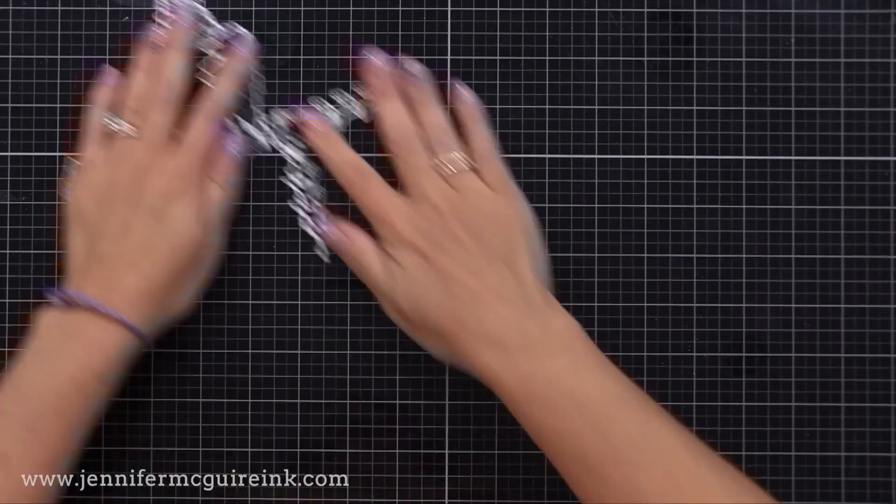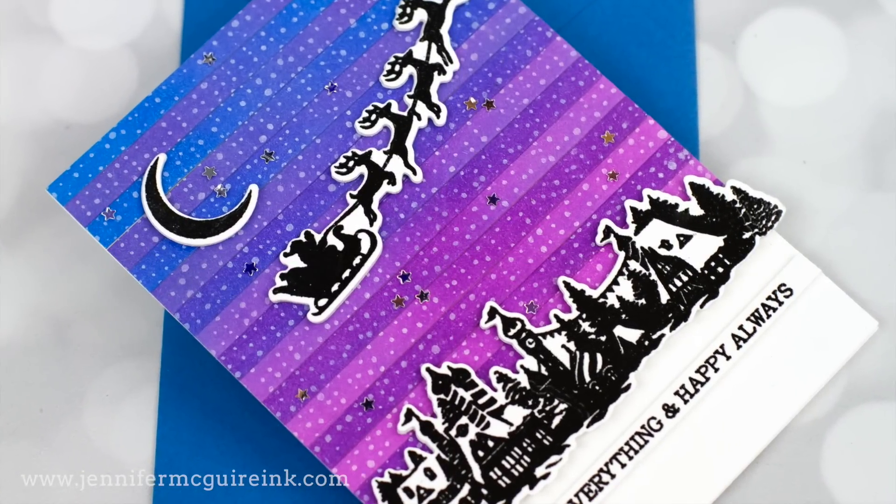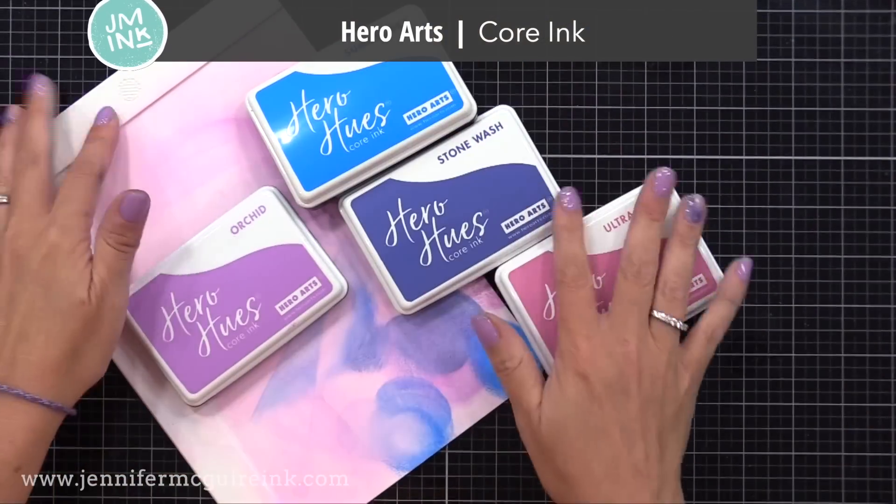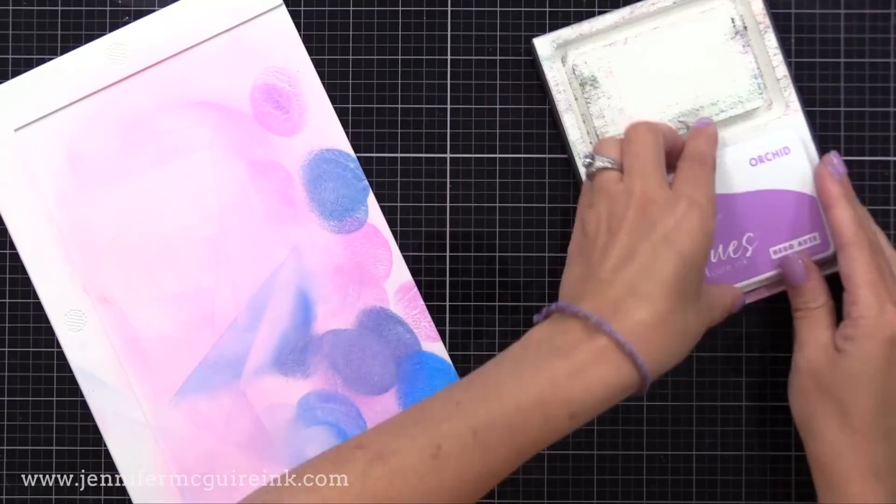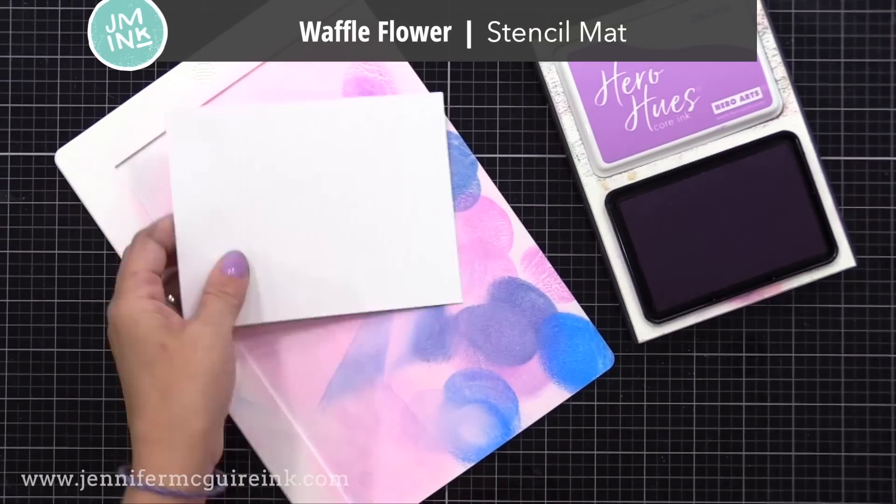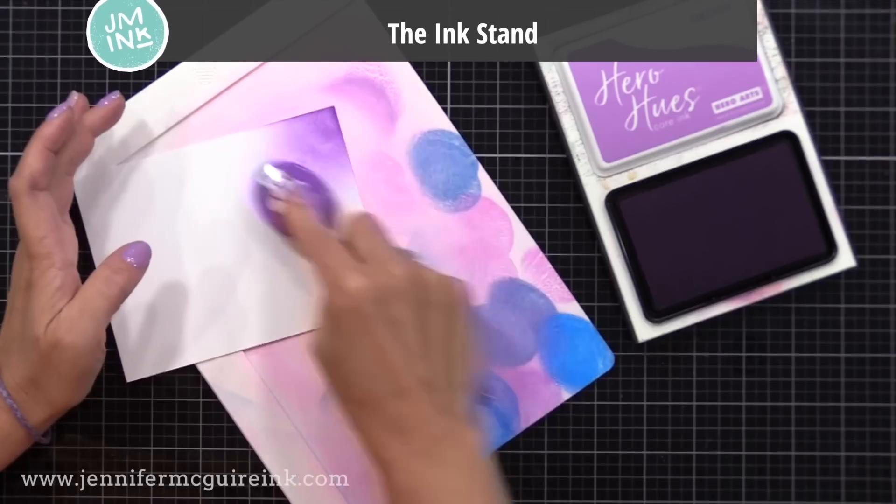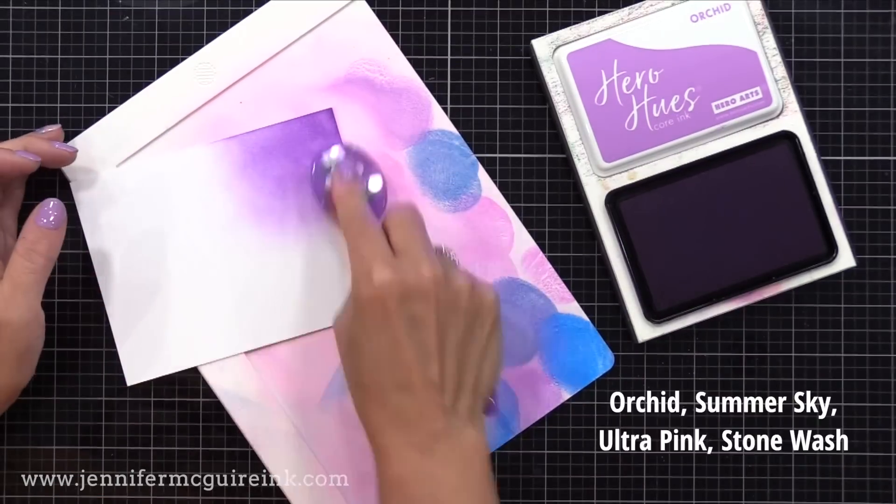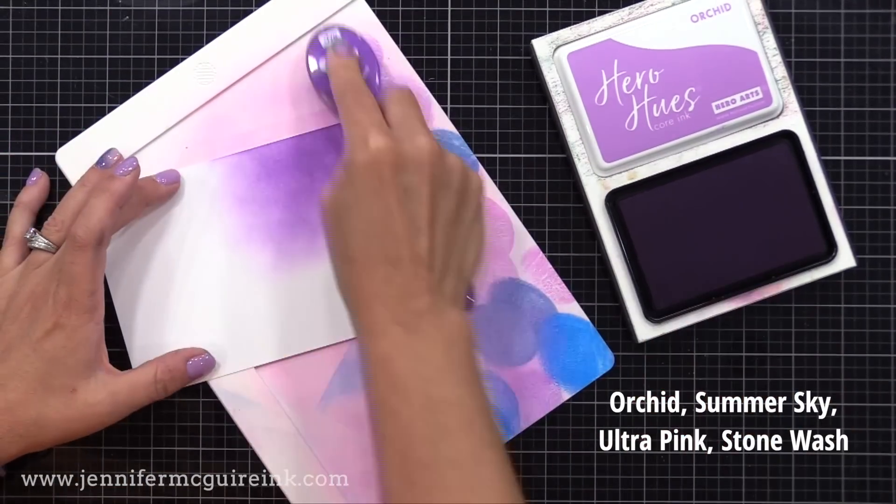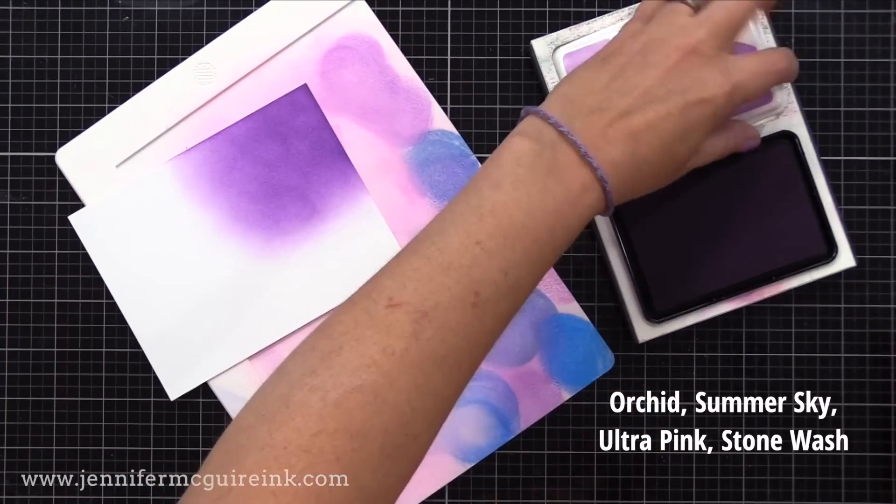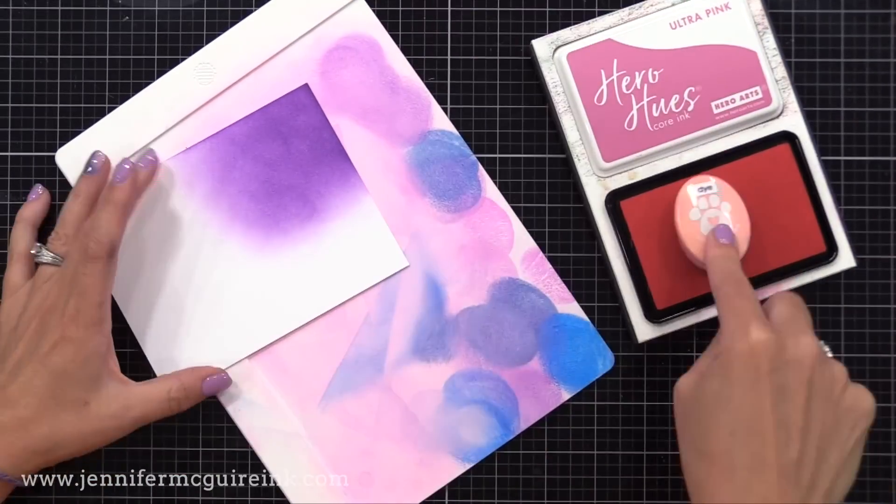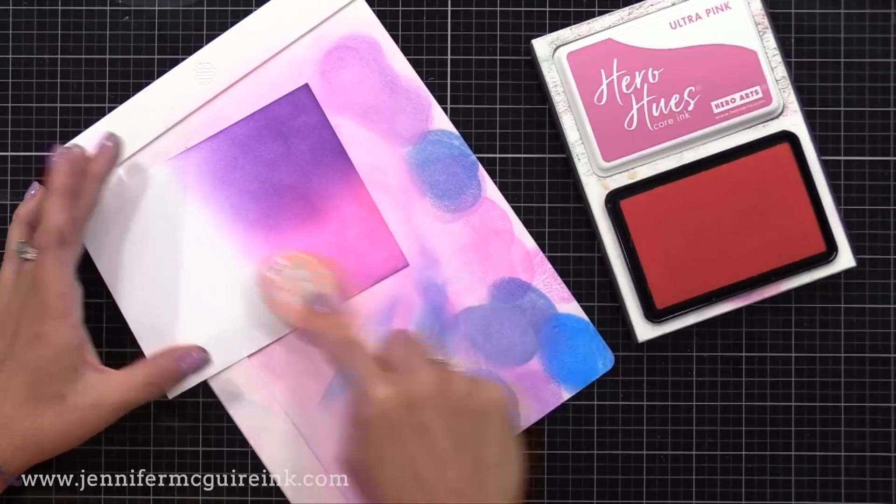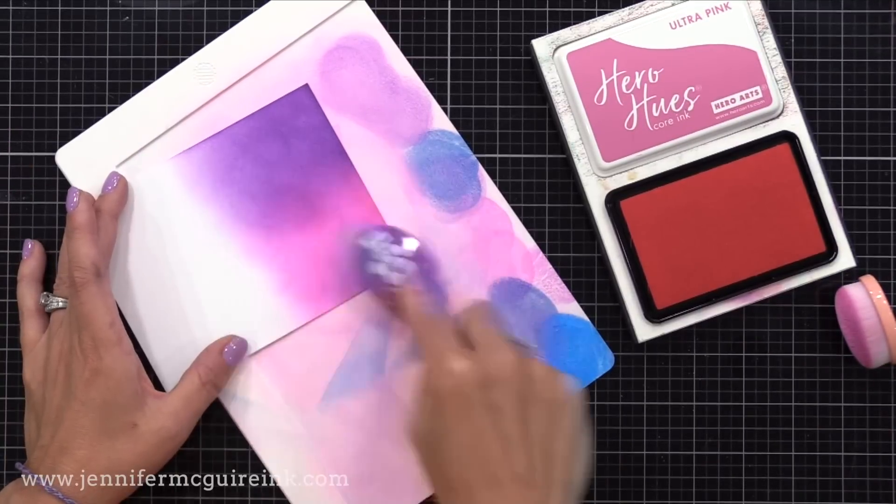We can now do the fun part, which is the inky background. For this example, I'm using Hero Arts Core Ink. You could use any inks that you want here. I have a piece of white cardstock here and a blending tool, and I'm blending the ink onto the paper. The best part about this technique is you do not need to have a good blend by any means. So if you struggle with blending, you might want to try this out.